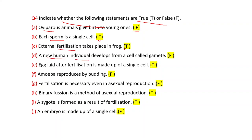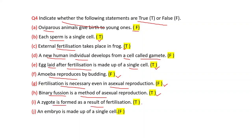A new human individual develops from a cell called a gamete — False. An egg after fertilization is made up of a single cell — True. Amoeba reproduces by budding — False. Fertilization is necessary even in asexual reproduction — False. Binary fission is a method of asexual reproduction — True. A zygote is formed as a result of fertilization — True. An embryo is made up of a single cell — False.